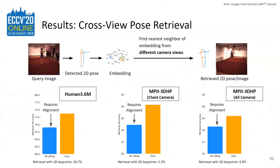Since 3D poses are not view invariant, we apply Procrustes alignment between every query-index pair during retrieval, which is expensive due to SVD computations between every pose pair. In contrast, our embeddings can be directly used in simple Euclidean space without any pose processing. Our model is only trained on Human 3.6, and we see that it generalizes to the 3D HP dataset, which contains new poses and new views. We evaluate on all cameras as well as a subset of chest-level cameras, and these results show that our model generalizes well to new poses and new views.